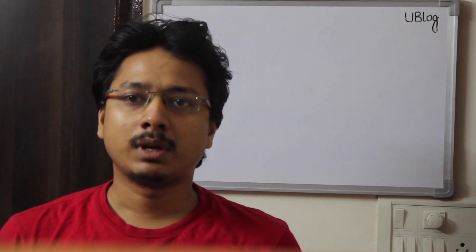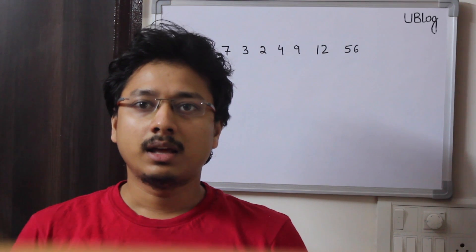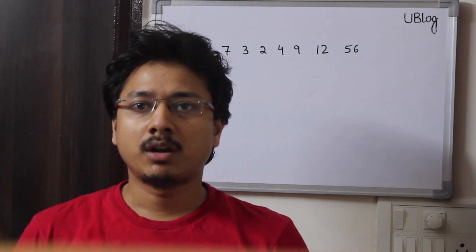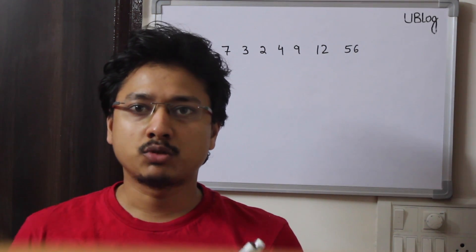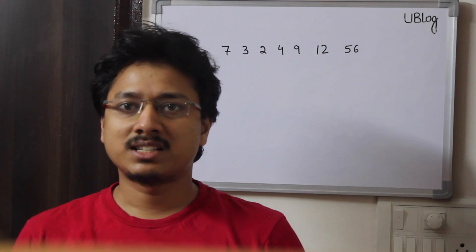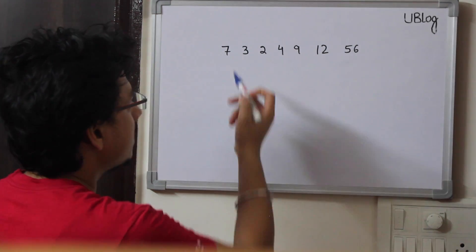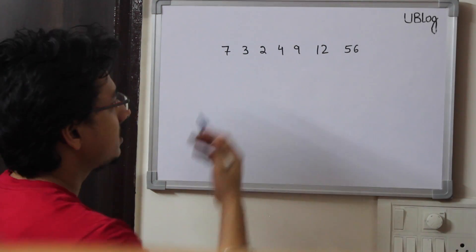For example, if m equals three, we need to distribute packets among three students. From the array we need to find three packets such that each student gets one packet and the difference between the number of chocolates in the maximum packet and the minimum packet should be minimum. Let's understand this with an example.